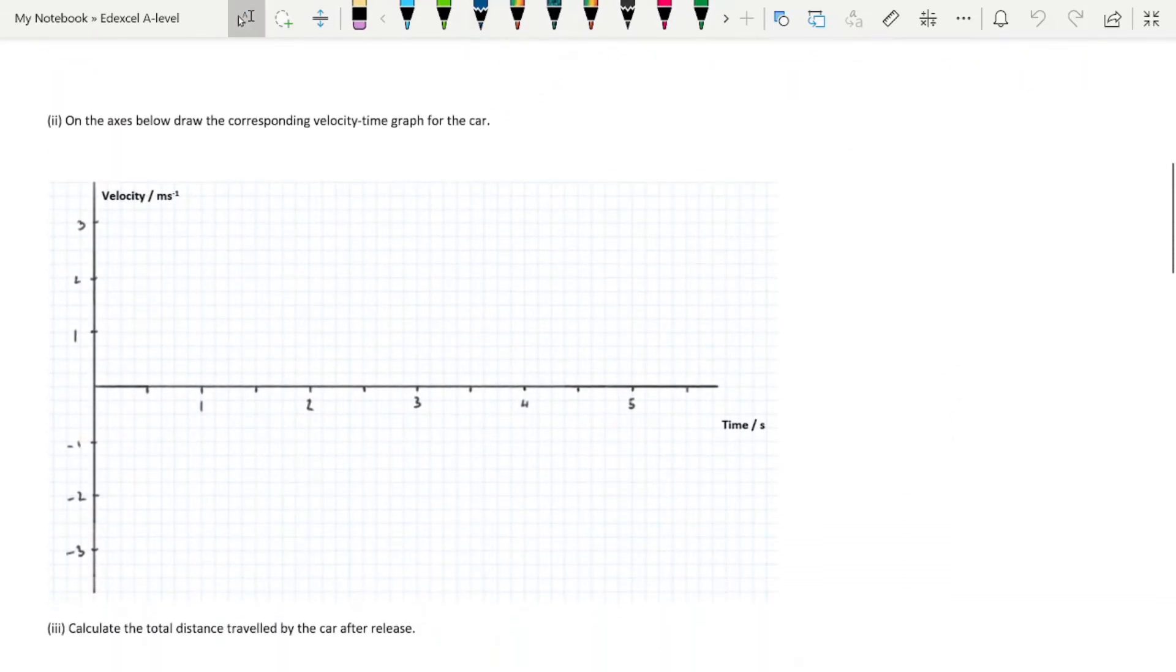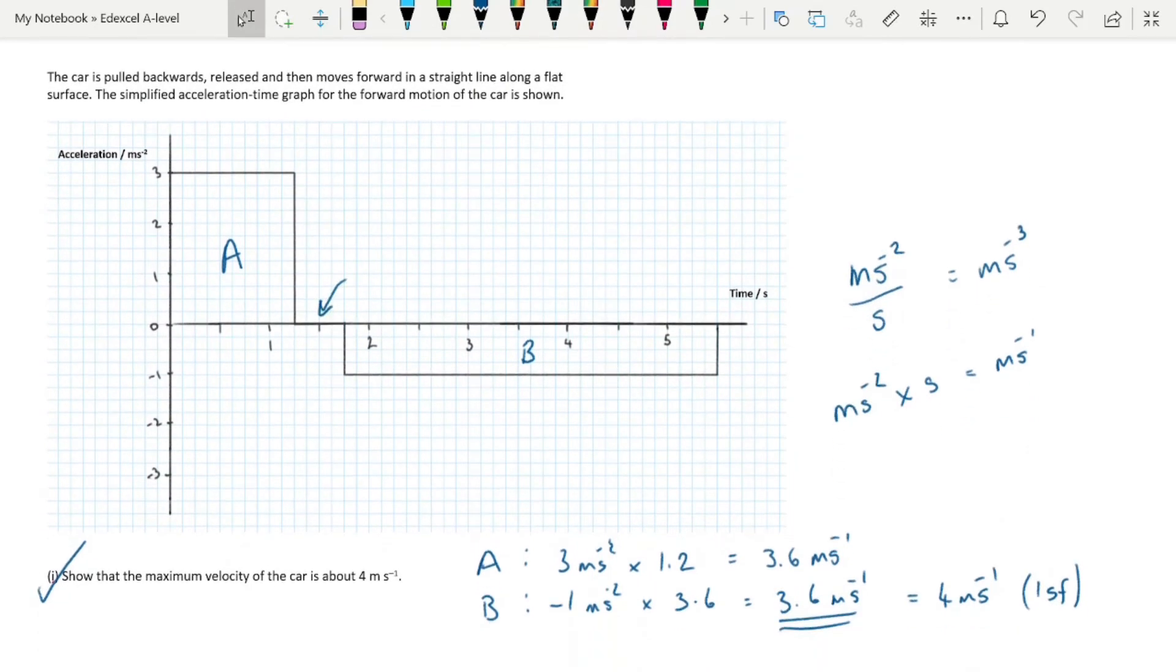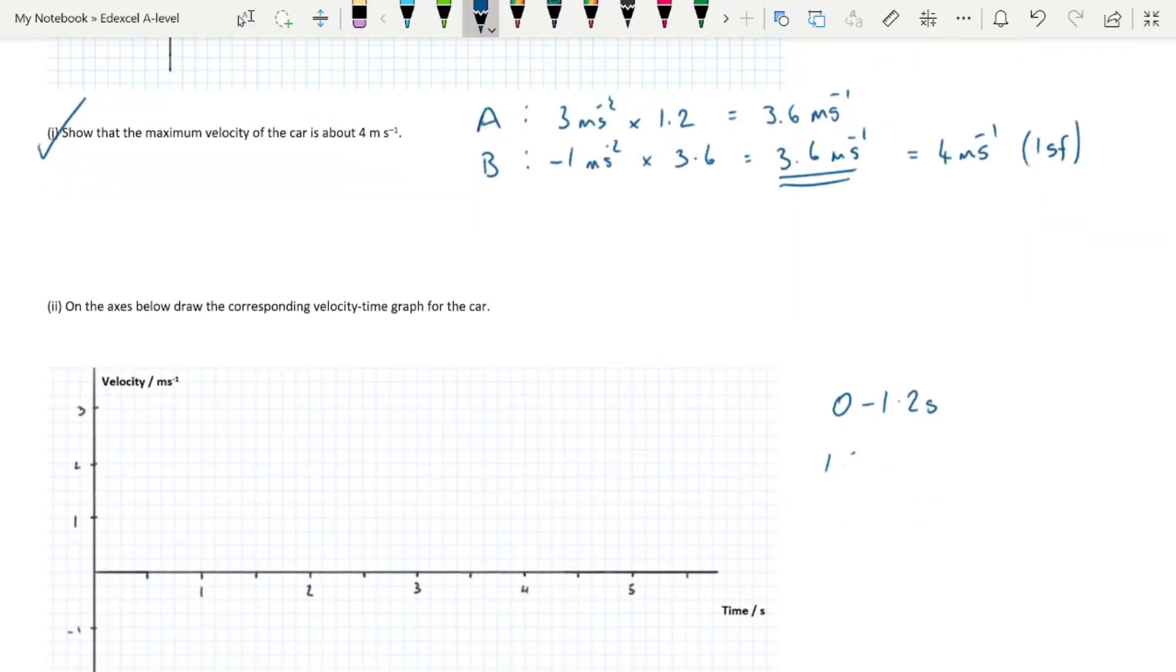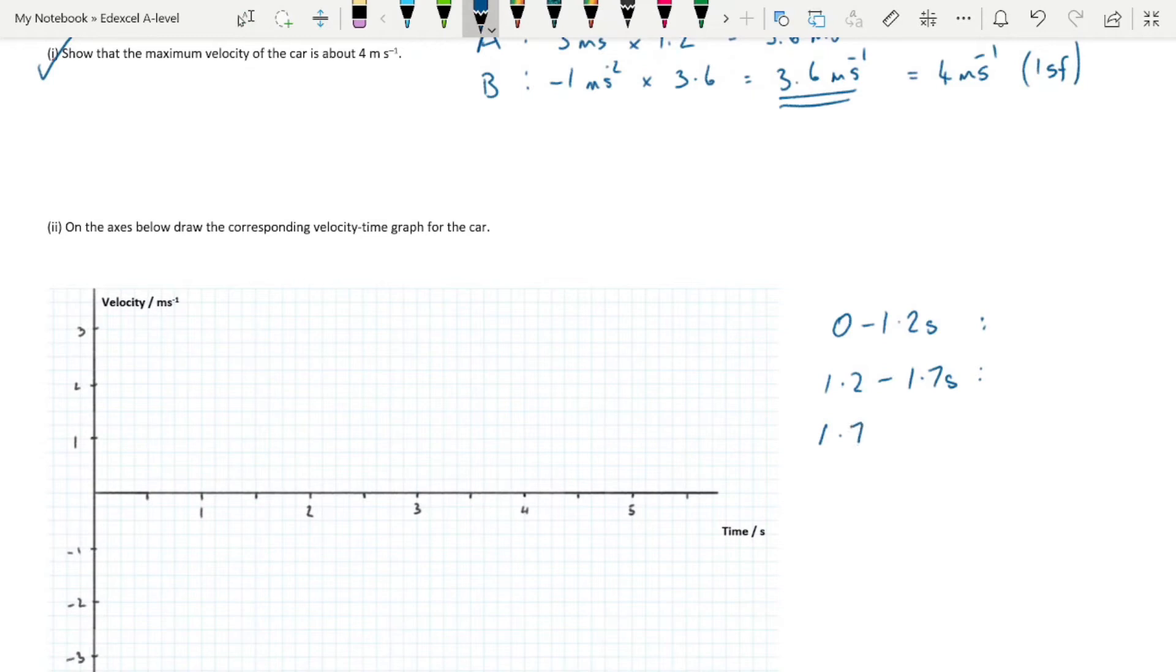Between 0 and 1.2 seconds, the car is accelerating. Then we have a section where the car is not accelerating, between 1.2 and 1.7 seconds. And then we have a section between 1.7 and 5.4 where the car is decelerating. When you do these questions, it's better to use your calculated value, your value to more significant figures. It's best practice to use that.